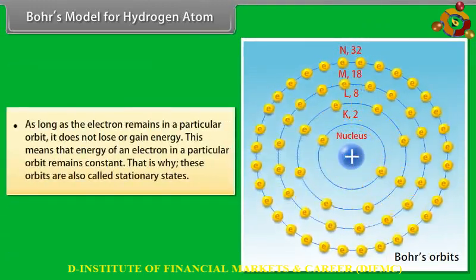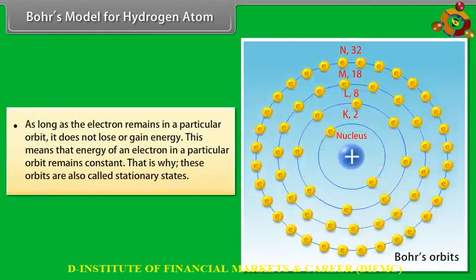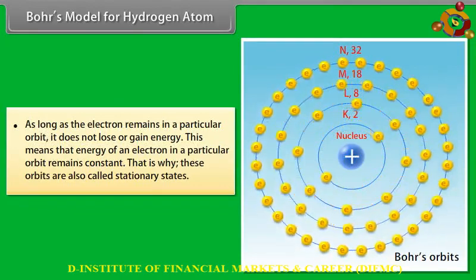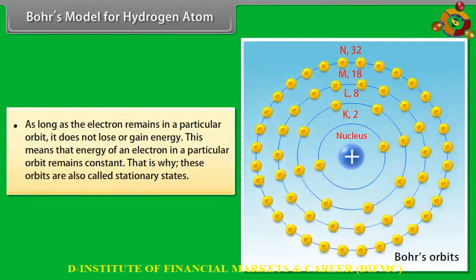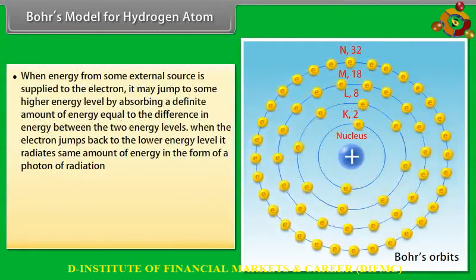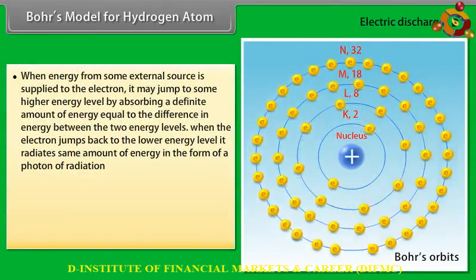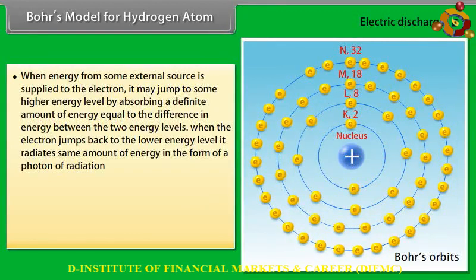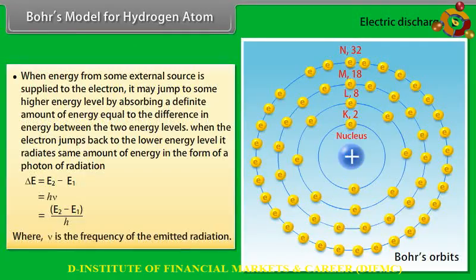As long as an electron remains in a particular orbit, it does not lose or gain energy — the energy remains constant, which is why these orbits are called stationary states. When energy from an external source is supplied, the electron jumps to a higher energy level by absorbing a definite amount of energy equal to the difference between the two levels. When it jumps back to the lower level, it radiates the same energy as a photon: ΔE = E₂ − E₁ = hν, therefore ν = (E₂ − E₁)/h.